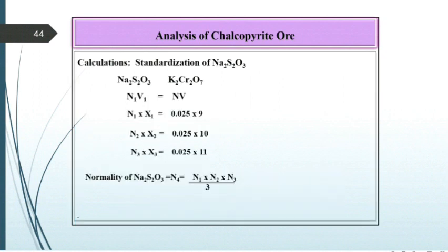Calculations: Na2S2O3 corresponds to K2Cr2O7. N1 × x1 = 0.025 × 9; N2 × x2 = 0.025 × 10; N3 × x3 = 0.025 × 11. The normality of Na2S2O3 = N4 = (N1 + N2 + N3) / 3.